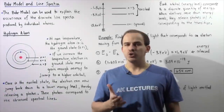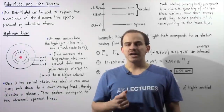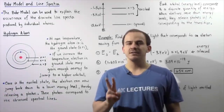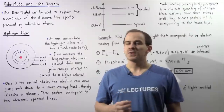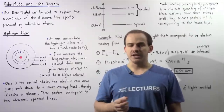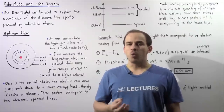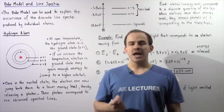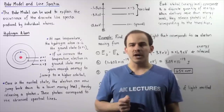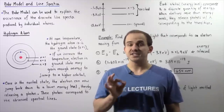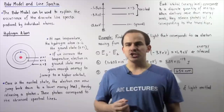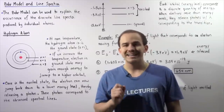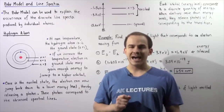The Bohr model is a very useful model that describes the structure of the atom because it does two very important things. Firstly, it incorporates the quantum theory of energy, the fact that energy is quantized. And secondly, it explains the formation of discrete line spectra produced by individual atoms.